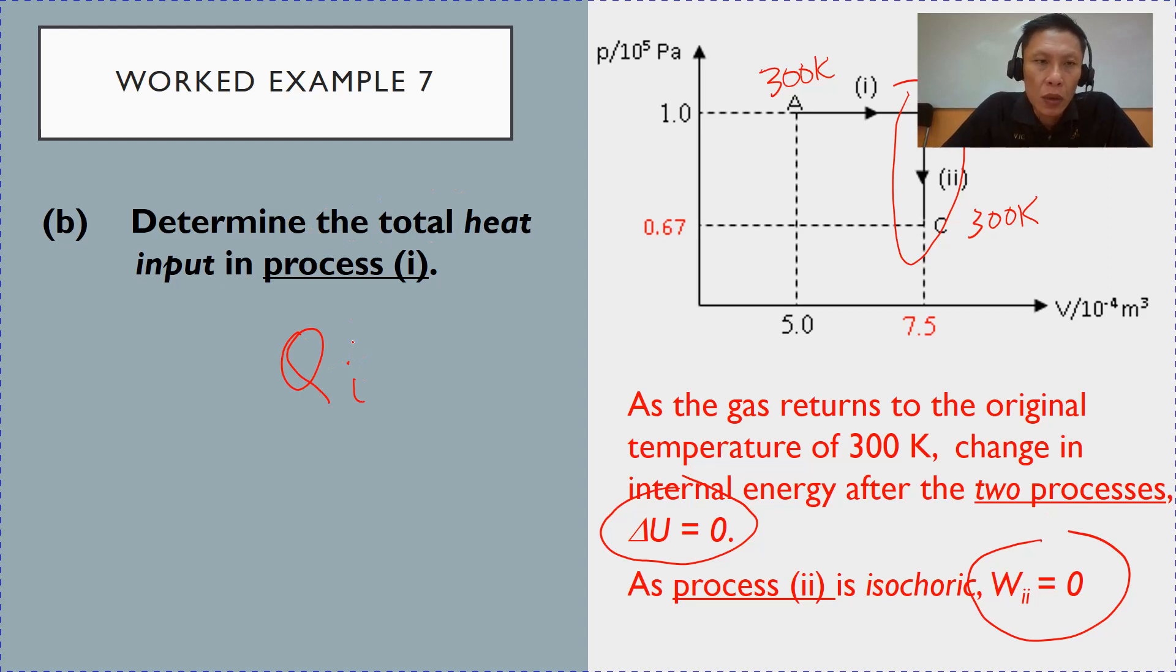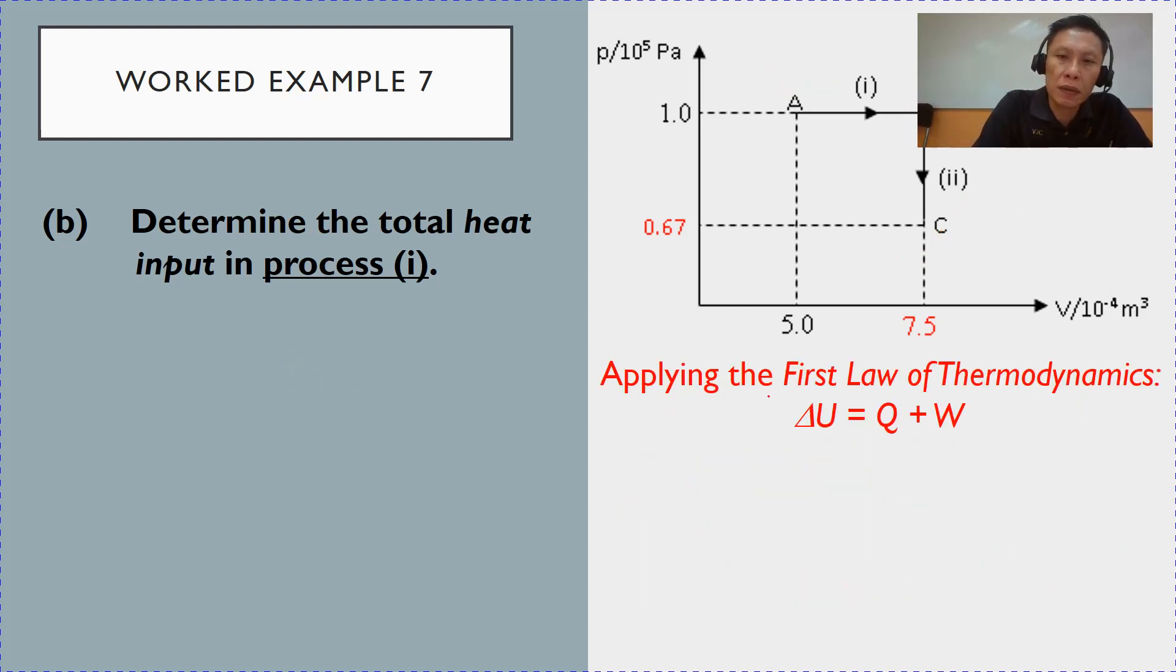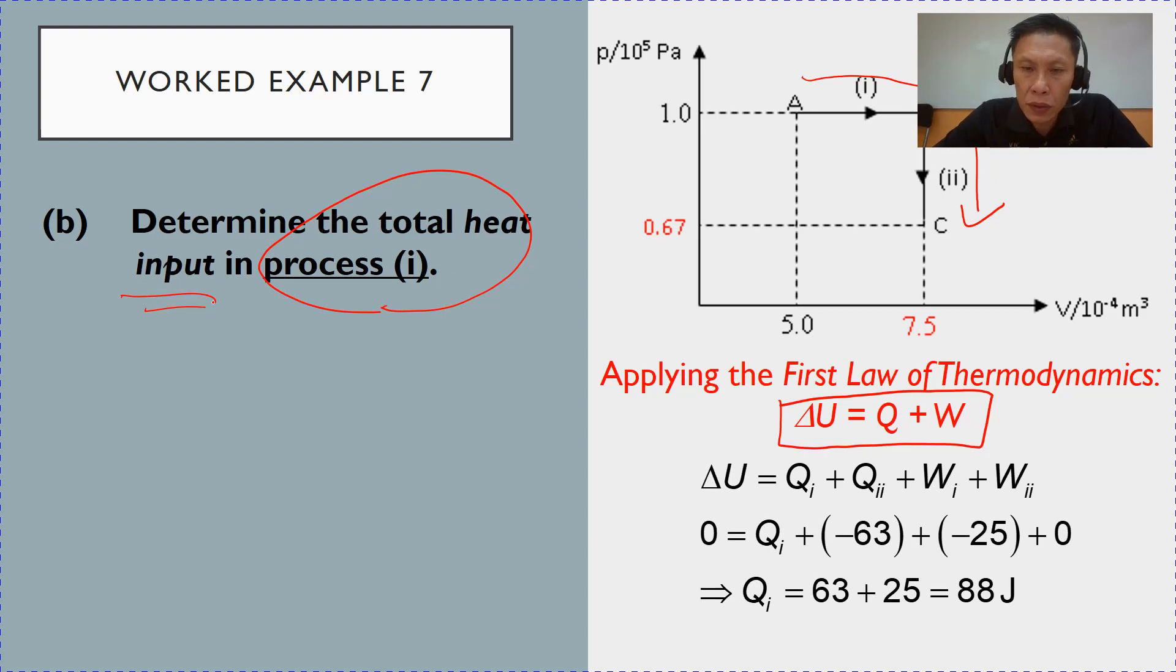And how do we do that? We will make use of the first law of thermodynamics, which, let me repeat again, change in total internal energy is the heat supplied to the system plus the work done on the system. We are going to use this law for both processes, processes 1 and 2, in order to find out the heat in process 1, the total heat input in process 1. So, this is how it goes, change in internal energy. So, there are two processes. So, there is Q1, Q2, there is W1, work done for process 1, work done on process 2.